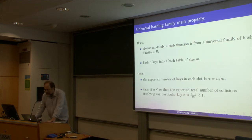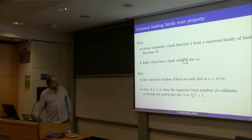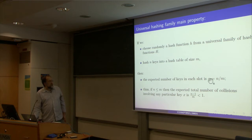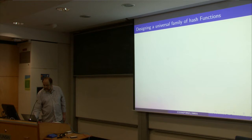The conclusion is: if we choose randomly a hash function from a universal family H and hash n keys into a table of size m, then the expected number of keys in each slot is n/m. If n is smaller than or equal to the size of the hash table, this is strictly smaller than 1, so the expected number of collisions per slot is strictly less than 1.